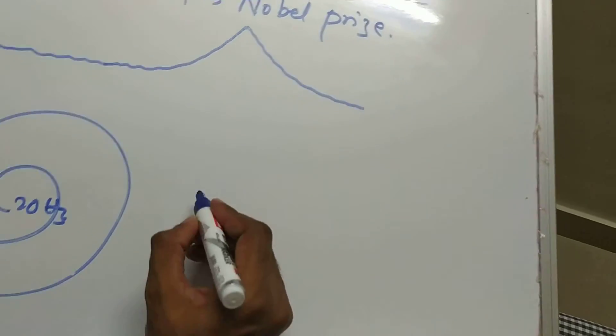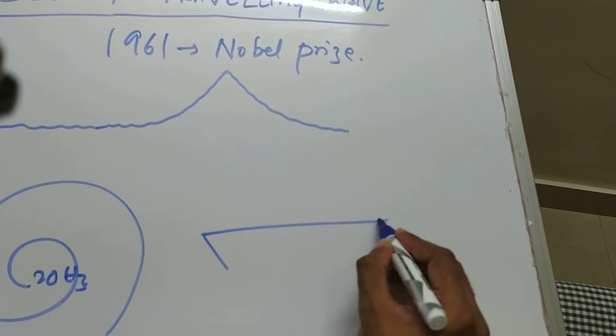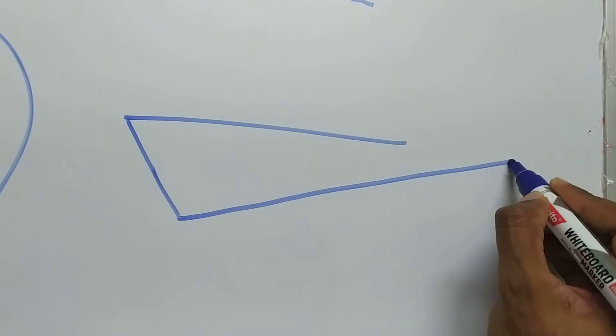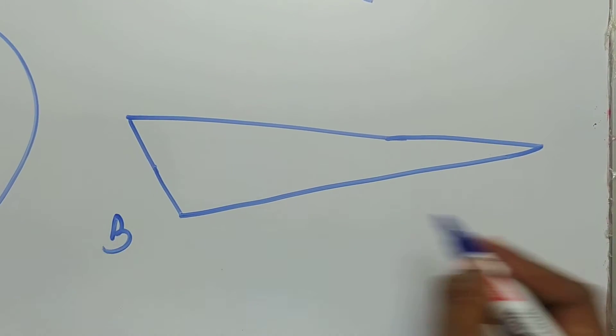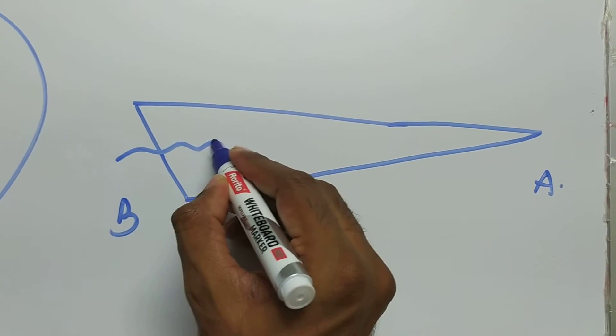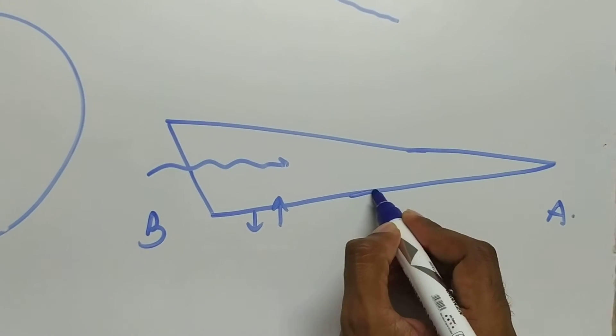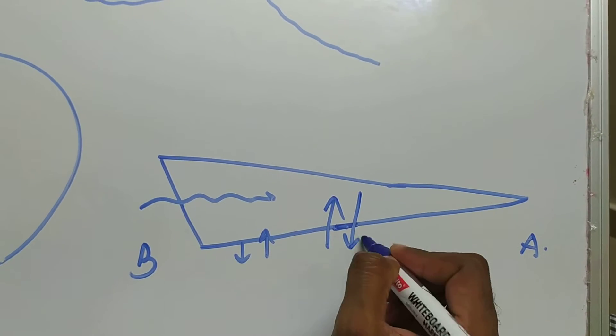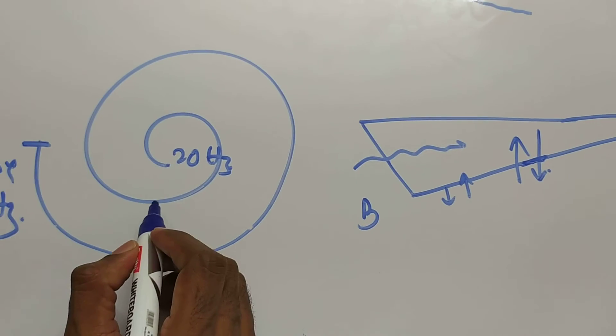The basilar membrane is thick and rigid at the base and flexible, tapering towards the apex. As the traveling wave moves, the entire basilar membrane moves up and down. At one particular frequency representative of the sound stimulus, it shows maximum vibration. This is the respective frequency represented in the cochlea.